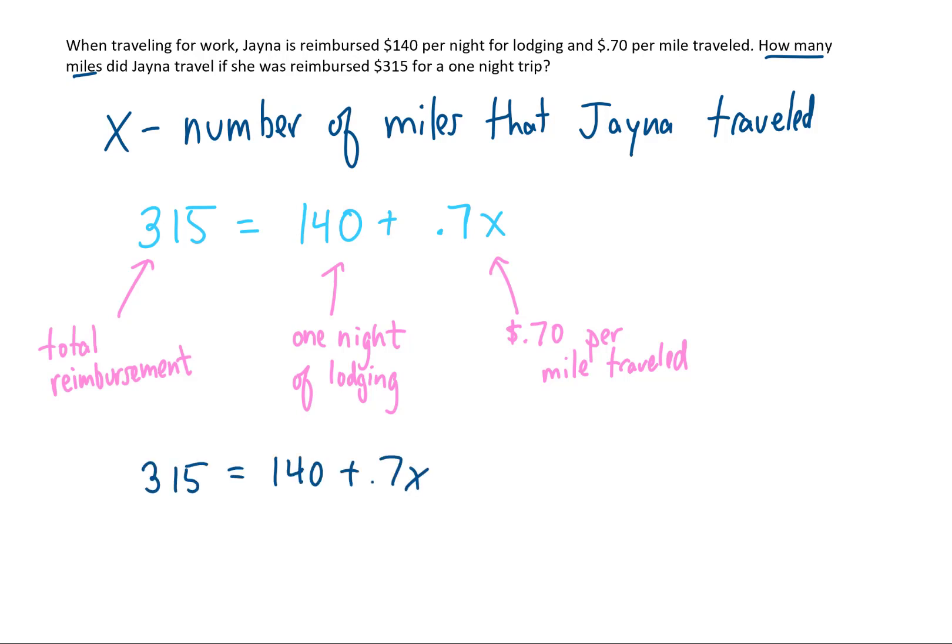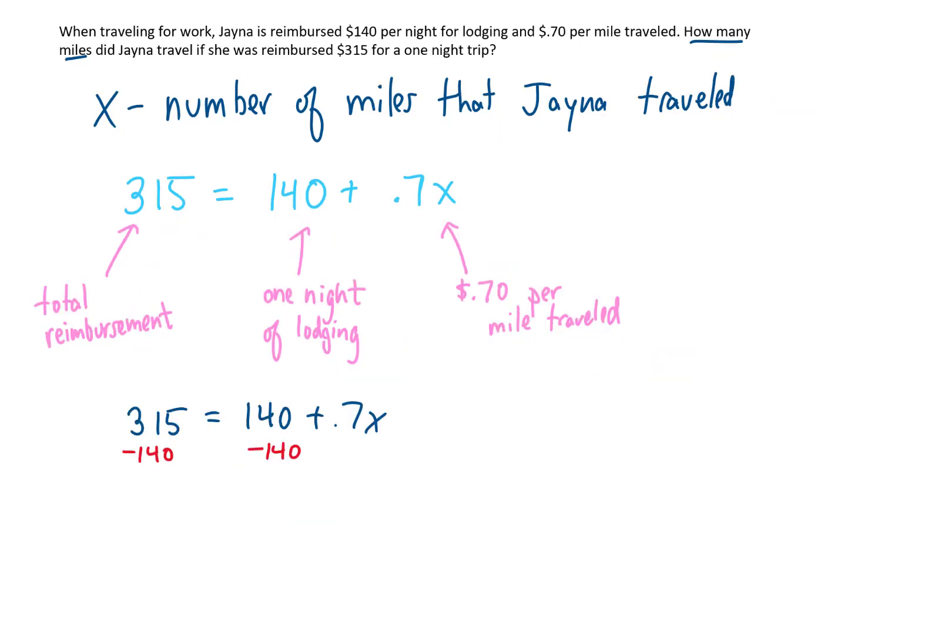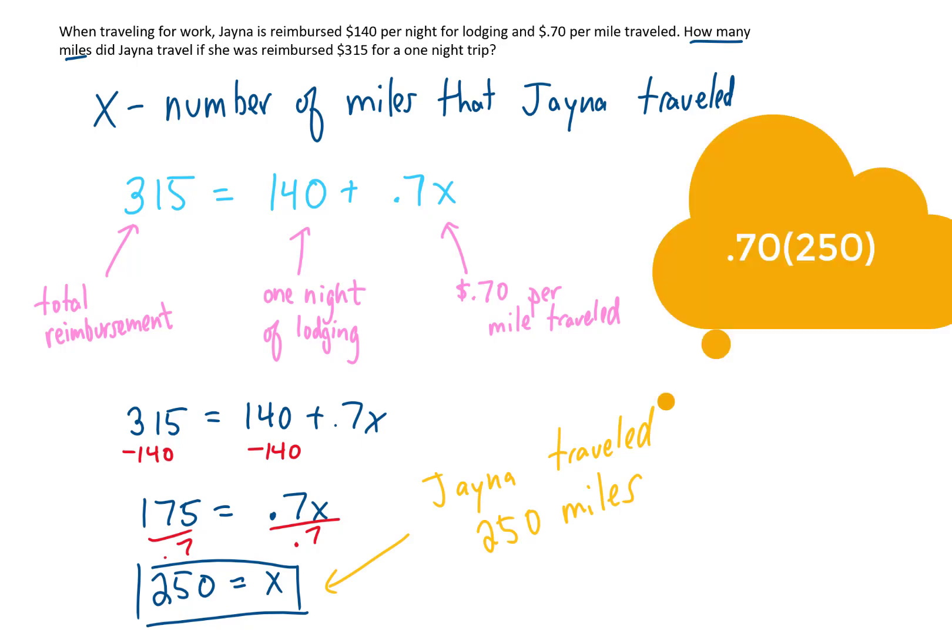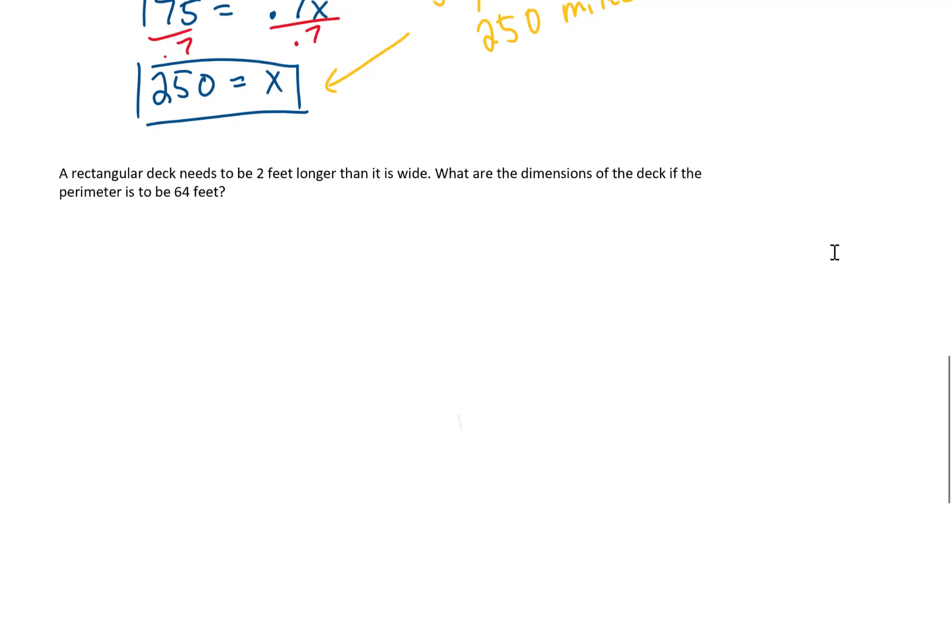We now have an equation that we can solve. To start isolating x, the first step would be to subtract $140 from both sides of the equation. On the left side, we're left with $315 minus $140, which is $175. On the right side, we're left with $140 minus $140. Those cancel, which was kind of the idea. So we just have .7x left over. Now you'll notice that x is being multiplied by .7. To get x by itself, then we're going to have to divide both sides of the equation by .7. Doing that division on the left gives us $250. And on the right, the .7s cancel, leaving us with x by itself. And that is our answer. That is the number of miles that Jaina traveled. And as always, it's good to check your answer. At least make sure that this amount of miles makes sense. That's $0.70 per mile times 250 miles. That would mean Jaina earned $175 in mileage. Add that to the $140, that'll give us that $315. So I think that answer is right.